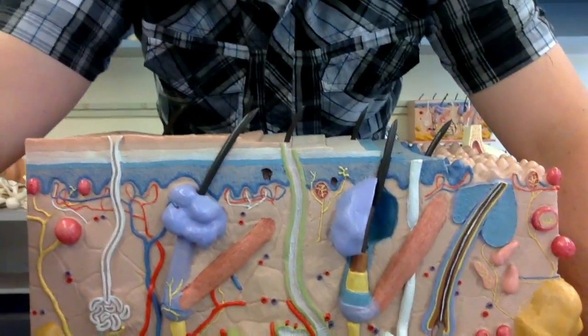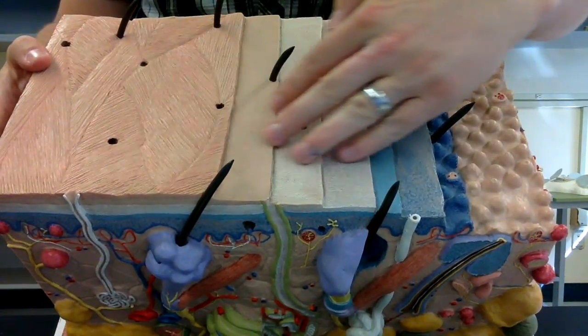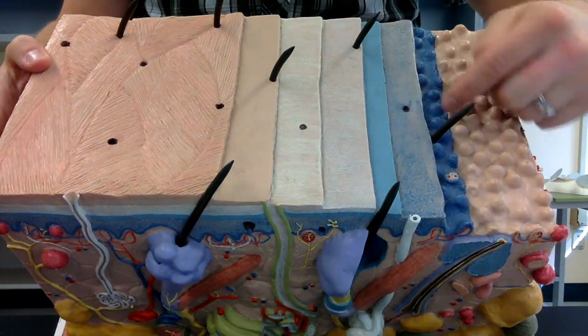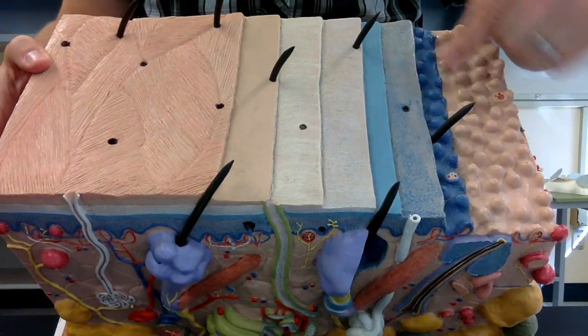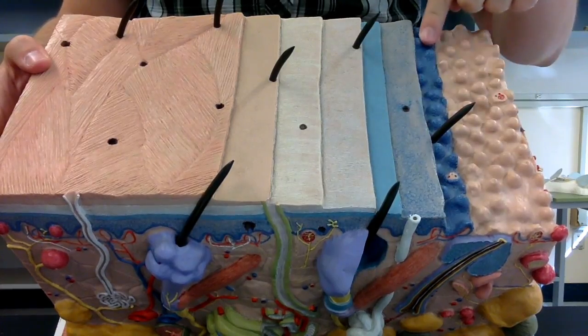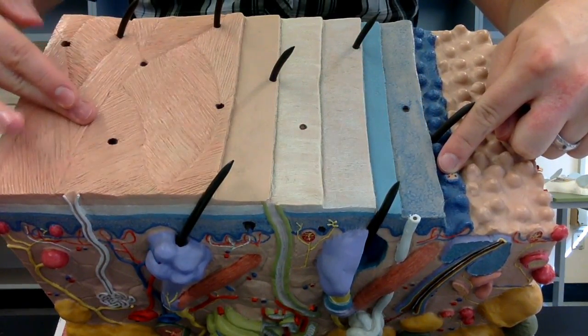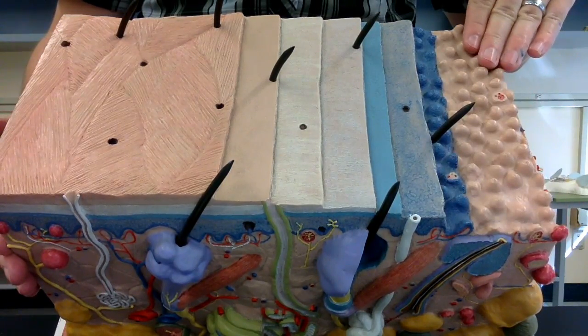But first we're going to talk about the different layers within the epidermis itself. So we're going to take you through the skin model real quick. So right here are the different layers of the epidermis, all the way up until you hit this bumpy dark blue portion, which is going to be your basal lamina. This basal lamina is connecting all of these layers of the epidermis down to the beginning of the dermis right here.